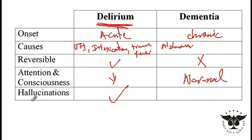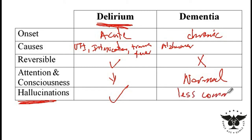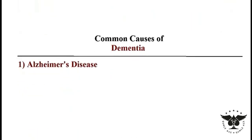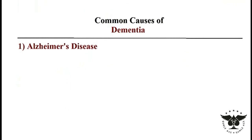They may forget things, but they would still be able to listen to you and understand what you're telling them. They can also present with hallucinations, but hallucinations are usually less common than in patients who are delirious.